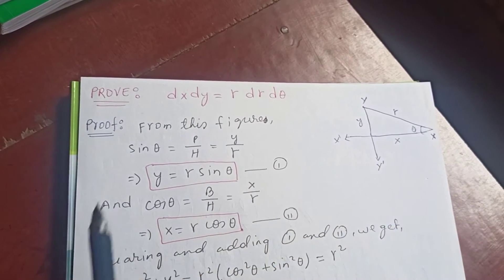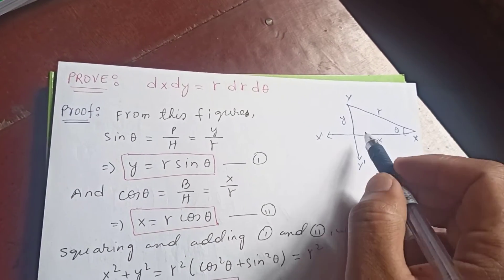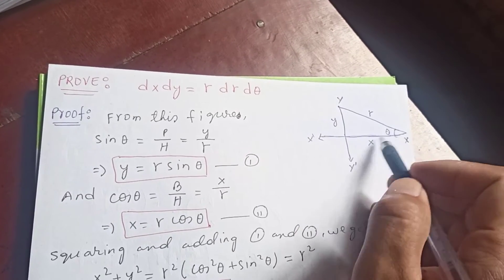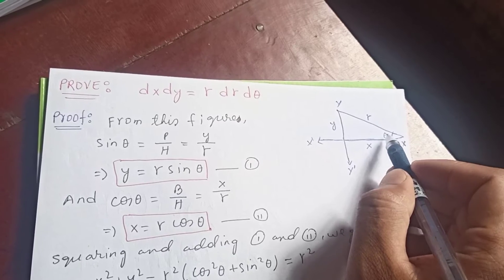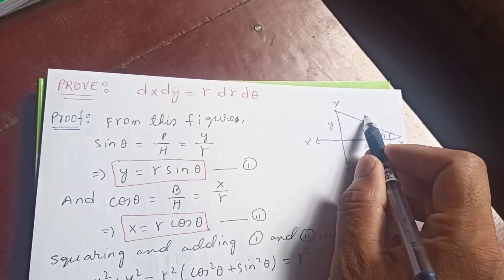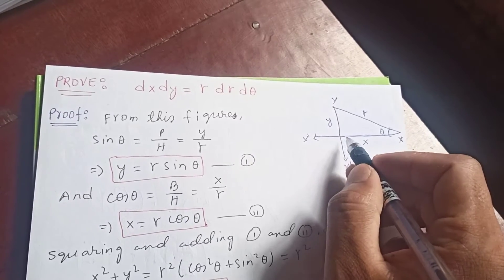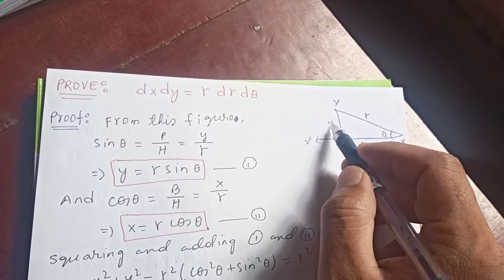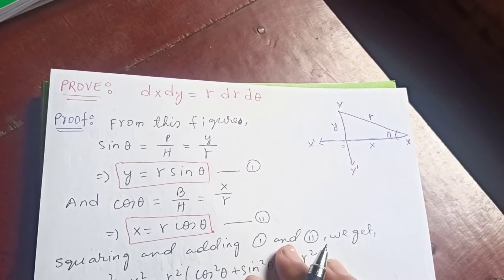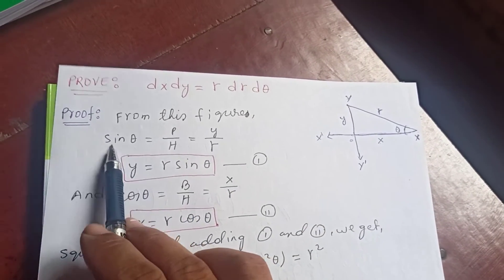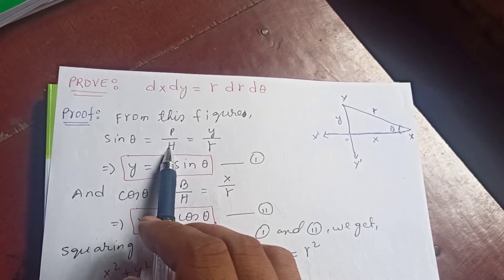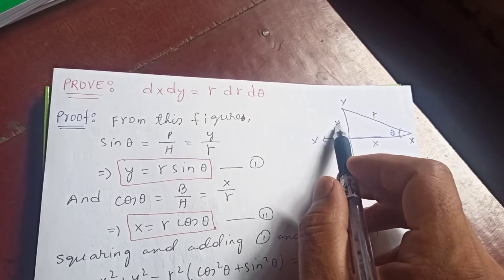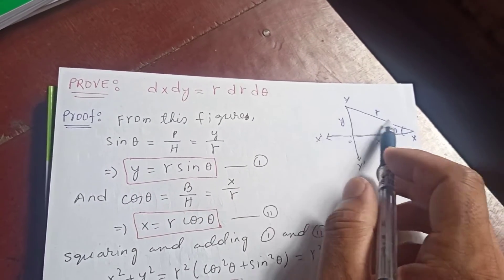To prove this, let's draw a right angle triangle. This is the x-axis and this is the y-axis. We draw a right angle triangle anchored at θ. This angle is θ, this is the hypotenuse which we call r. The distance from the origin along x is x, and from origin to the top is y. From the figure, sine θ is perpendicular by hypotenuse, and the perpendicular here is opposite this angle.